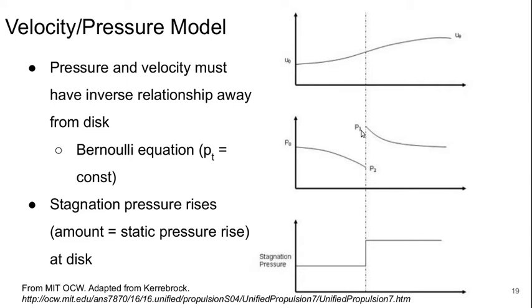And the static and stagnation pressure rises across the disk are equal because there's no change in velocity at the disk. So the stagnation pressure is constant, jumps up, constant.